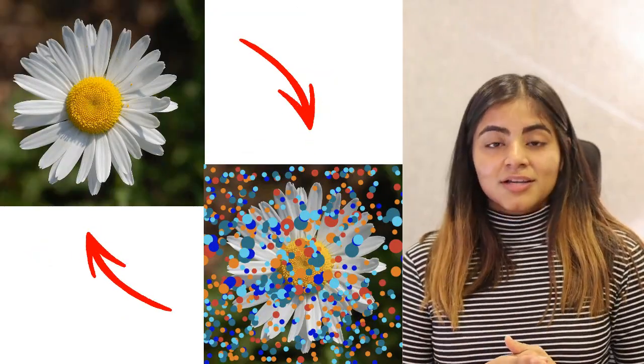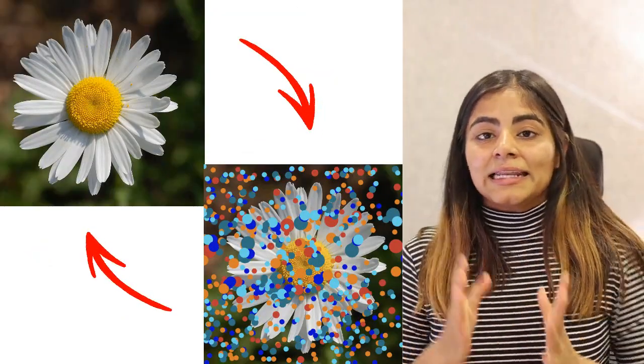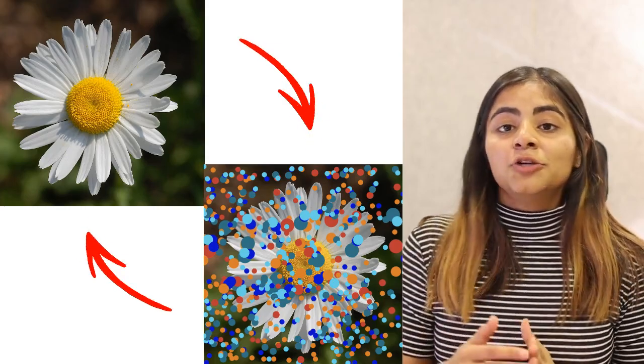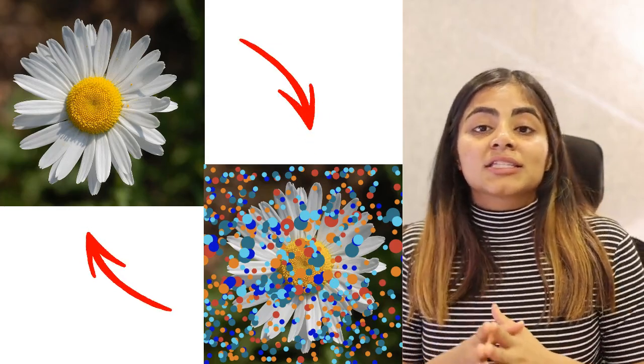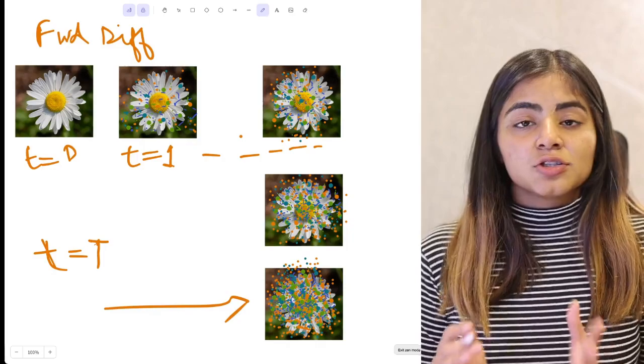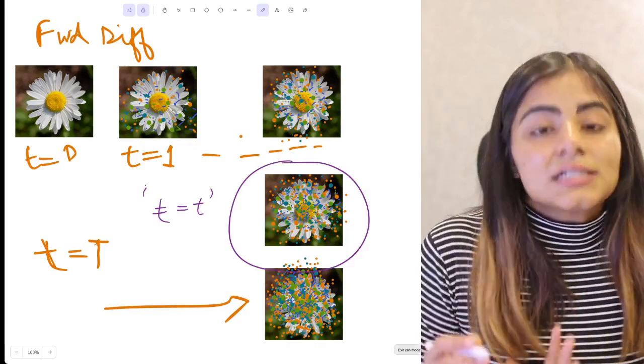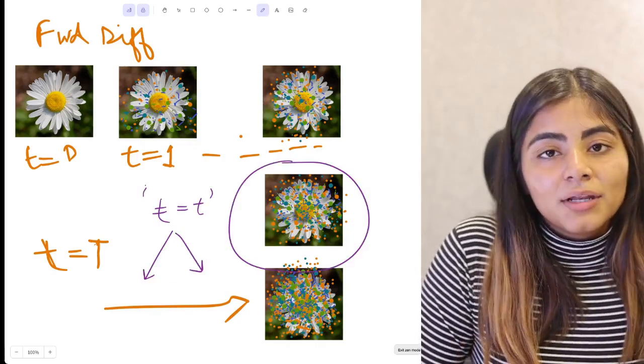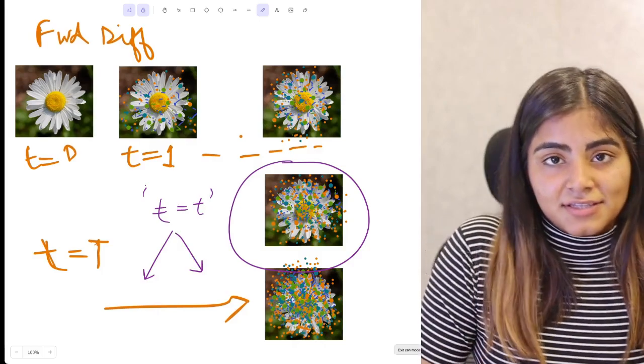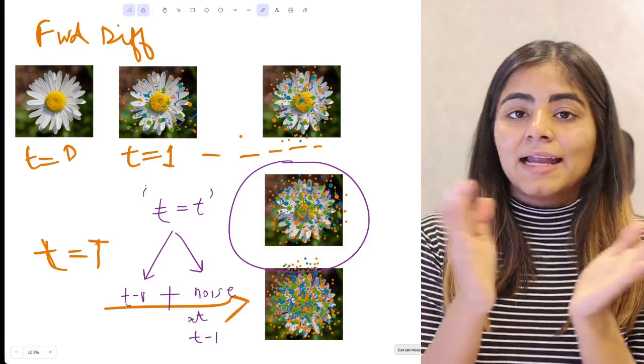Now the goal of our diffusion model is to reverse this process by training a neural network to return to our original image by knowing its distribution at the previous step. So like we saw in the noising process, our image at a certain time step t will be the combination of our image at the previous step plus the noise that has been added at t-1.